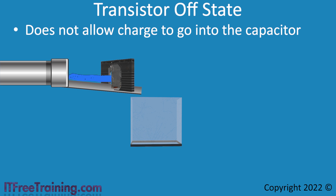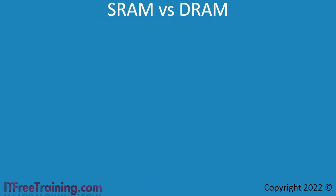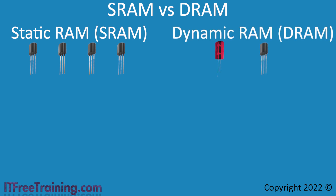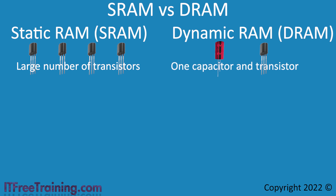Let's compare transistor-based and capacitor-based RAM to have a better understanding of when they may be used. Transistor-based RAM is commonly referred to as static RAM or SRAM. Capacitor-based RAM is often referred to as dynamic RAM or DRAM. SRAM requires a large number of transistors, so the chips need to be larger or each transistor on the chip needs to be smaller. DRAM, in contrast, requires one capacitor and one transistor per bit. This means that SRAM costs more per bit to manufacture than DRAM, which therefore costs less to manufacture per bit.